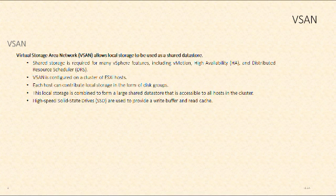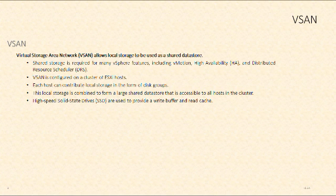We'll talk about how vSAN can be used to allow local storage to be used as a shared data store. We need shared storage for a number of vSphere features, including vMotion, HA, and DRS. So in order to enable those features, if we don't have a dedicated hardware storage array, we can use vSAN on a cluster of ESXi hosts to leverage local storage in the form of disk groups. We can take all of that local storage and combine it to form a large shared data store that's accessible to all of the hosts in that cluster. The performance of vSAN is enhanced by solid state drives that are used to provide a write buffer and a read cache.